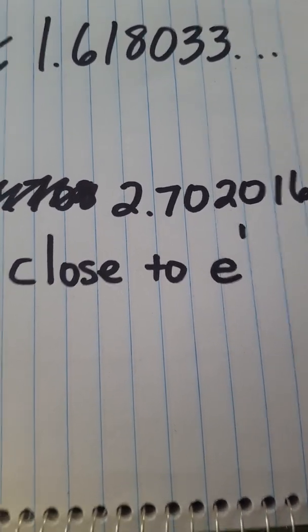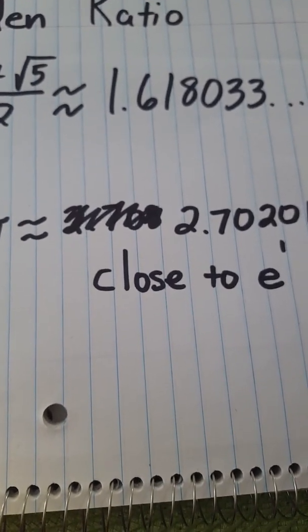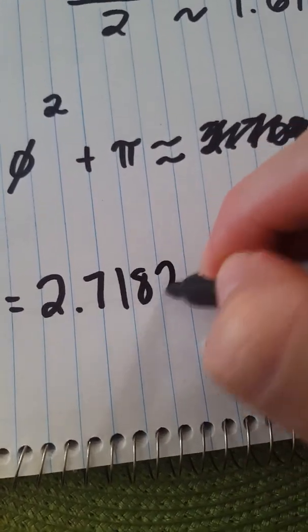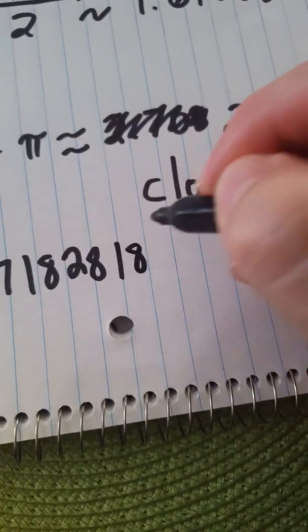Well, how close does this get to e? So the actual number e is given by this number right here. e to the first, which will give you the decimal, is 2.71828, 1.828, and it also continues going.